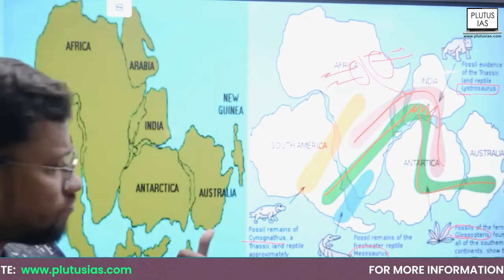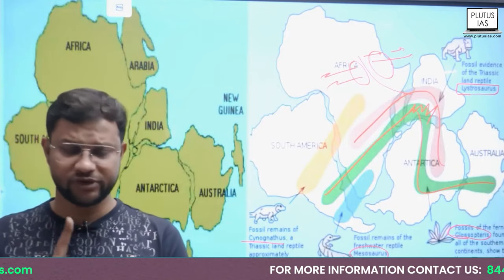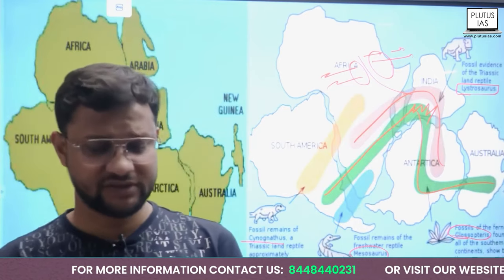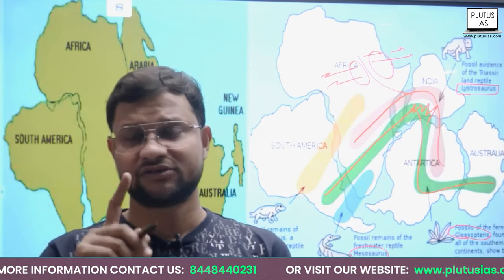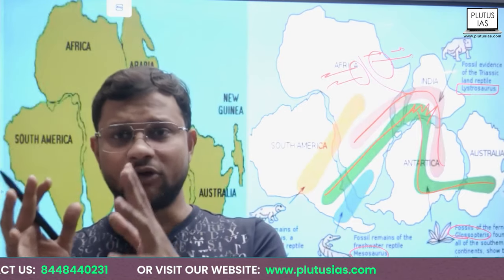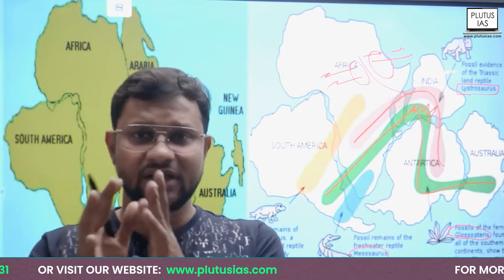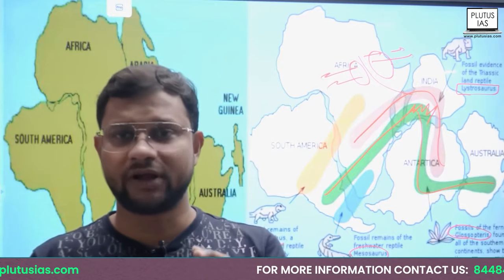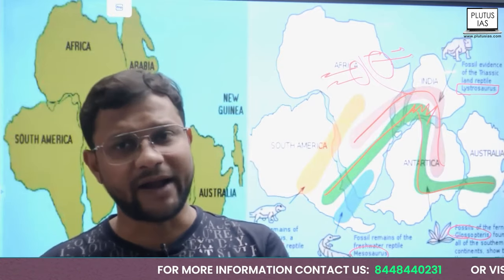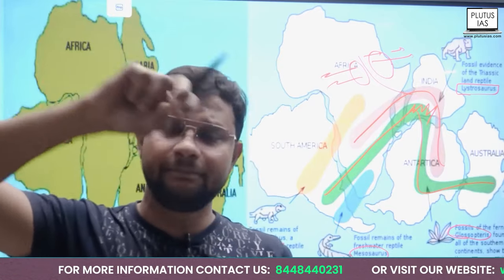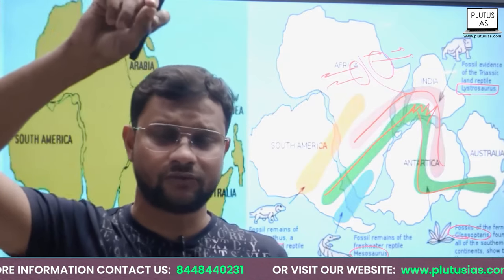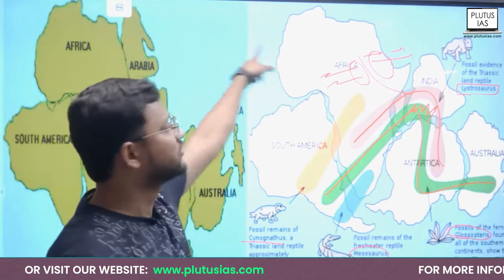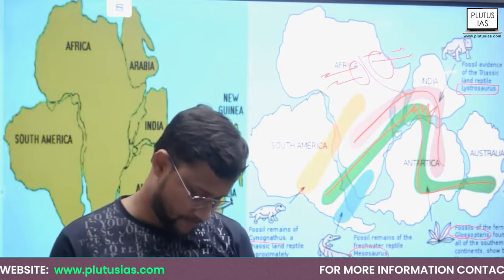This theory was proposed in 1912 by Alfred Wegener, based on the differentiation of landmasses. It led to the starting from Carboniferous — Pangaea, Panthalassa, Laurasia, Gondwana Land, and the Tethys Sea, and then further differentiation. The forces responsible were westward and equatorward — tidal force, pole-fleeing force, and gravitational forces. These are the evidences we have discussed.